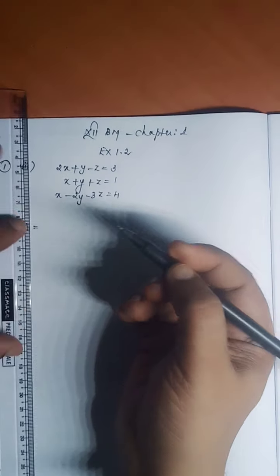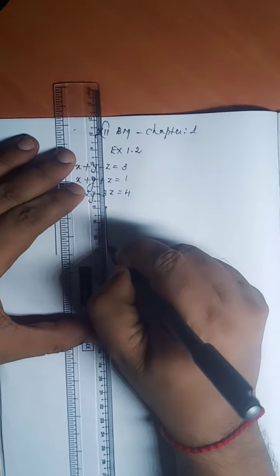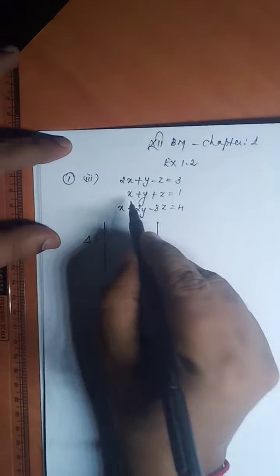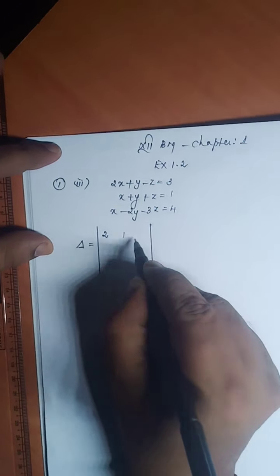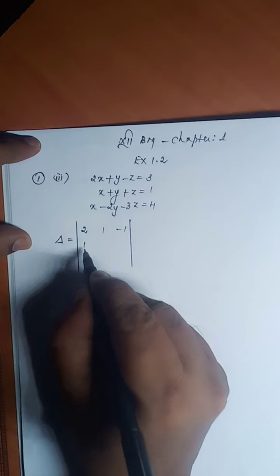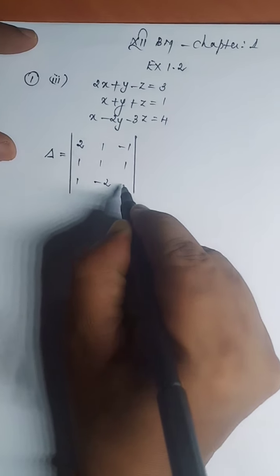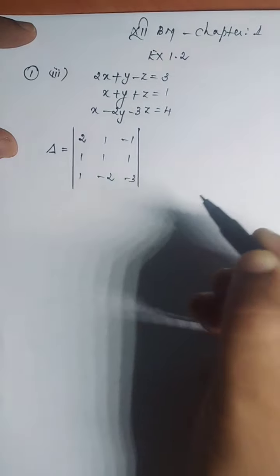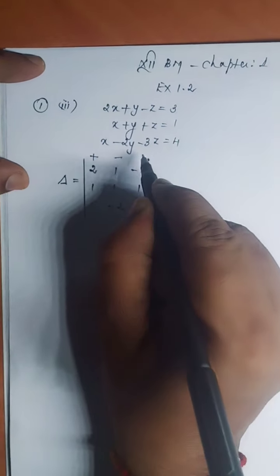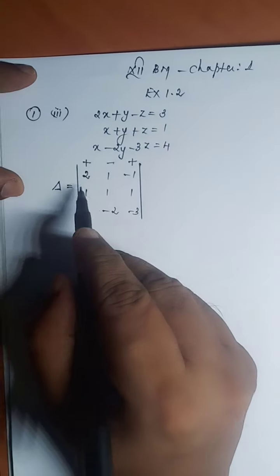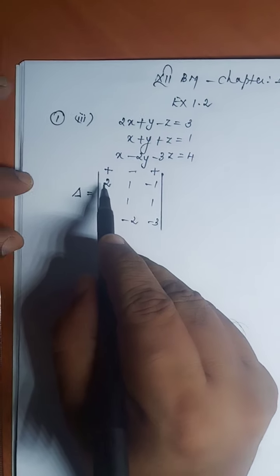Delta is equal to — the x, y, z coefficients: first row 2, 1, minus 1; second row 1, 1, 1; third row 1, minus 2, minus 3. At the top: plus, minus, plus, because I am going to expand the determinant by the first row.